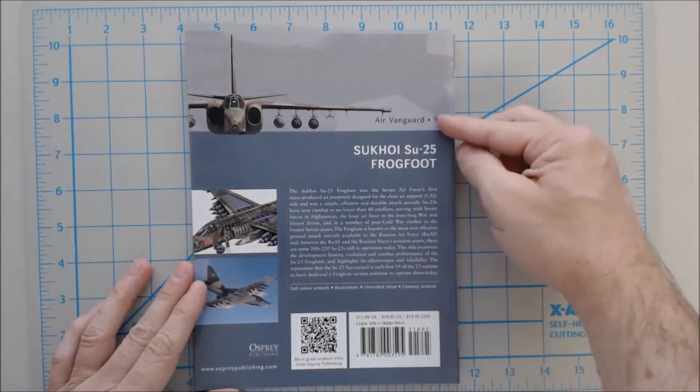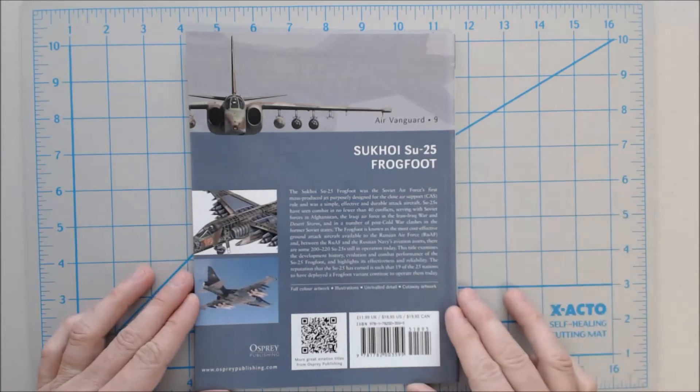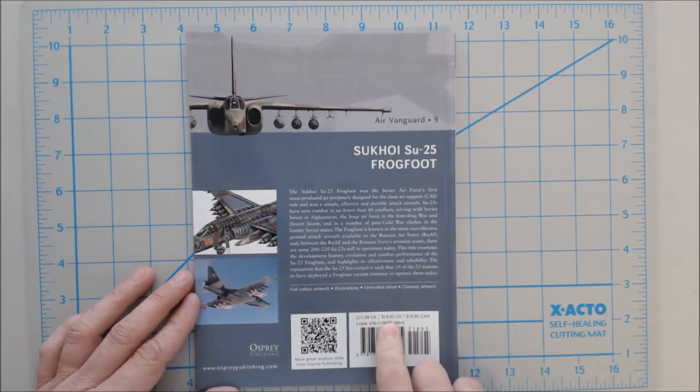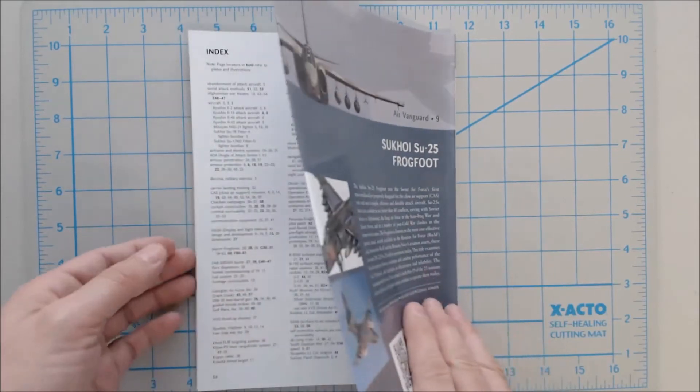If you look at the back, this is part of their Air Vanguard series, number 9, and pricing on these is $12, 12 pounds in the UK, $19 in the US, and about $20 in Canada, and those are list prices, so you may find them for less or more.